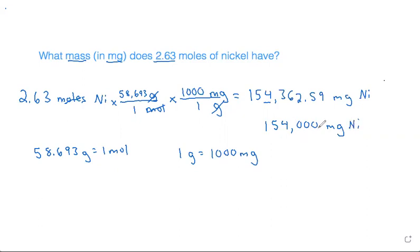Or if we write that in scientific notation, we would move the decimal one, two, three, four, five places to the left, which would be 1.54 times 10 to the five milligrams of nickel.